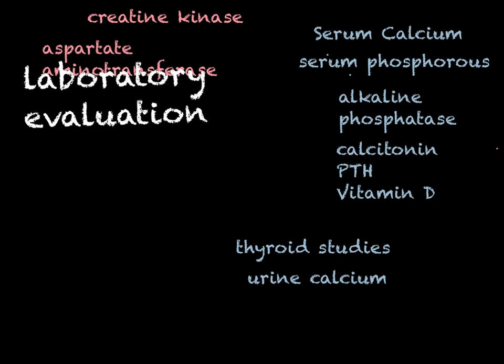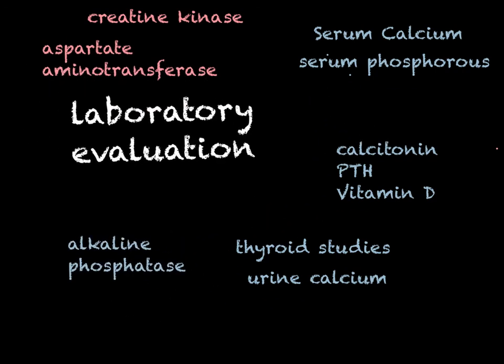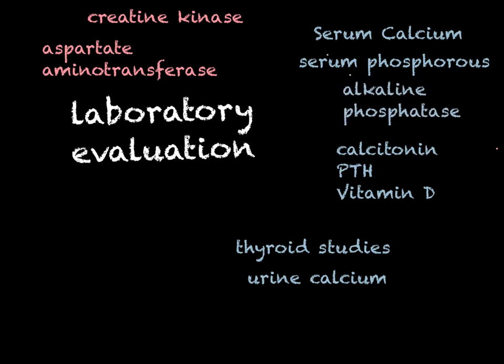Alkaline phosphatase is an enzyme that can be released by osteoblast cells. Anytime we're growing bone or repairing bone, we see elevated levels of alkaline phosphatase — for example, in a bone fracture or in the last trimester of pregnancy when the mom is growing bone for the fetus. You'll also see it in abnormal bone conditions like metastatic cancer, bone mets, Paget's disease of the bone, and osteomalacia — all conditions we'll cover later.